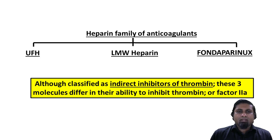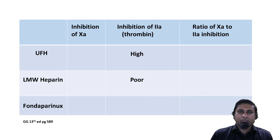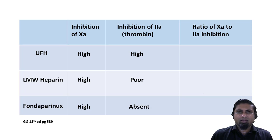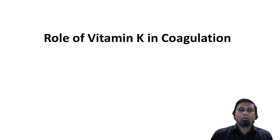Although heparin is classified as an indirect inhibitor of thrombin, these three molecules differ in their ability to inhibit thrombin. Unfractionated heparin (UFH) will inhibit thrombin very powerfully. Low molecular weight heparin inhibits thrombin poorly, and fondaparinux does not inhibit thrombin at all. However, all three of these molecules inhibit factor 10a equally. Considering the effect of unfractionated heparin on 2a and 10a, the inhibition is equal; alternatively, low molecular weight heparin inhibits factor 10a three times more powerfully than it inhibits factor 2a.